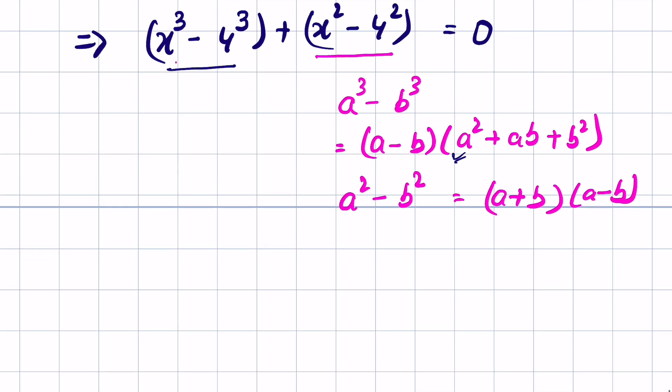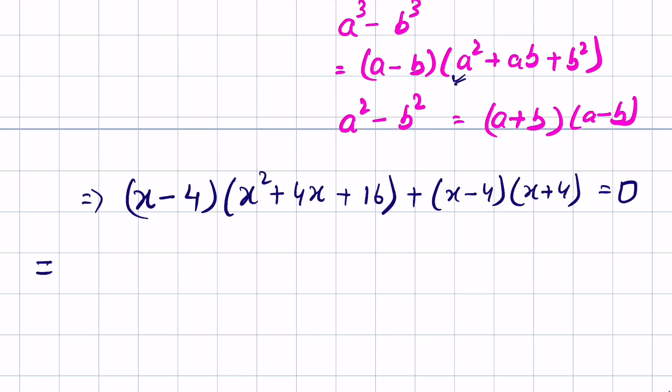So this will be (x - 4)(x² + 4x + 16) + (x - 4)(x + 4) = 0. Now here we can take (x - 4) as common.